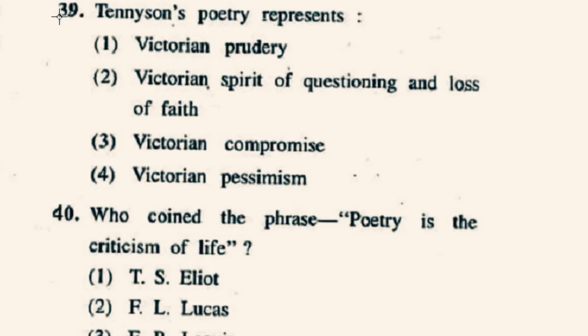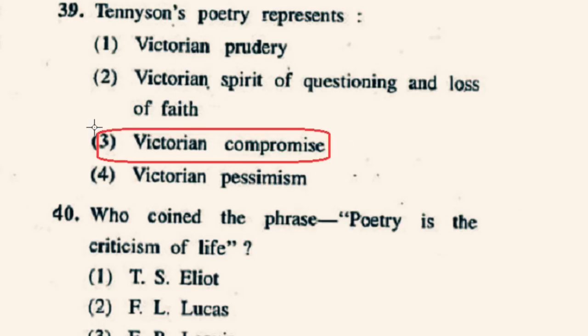Question number 39: Tennyson's poetry represents what? The Victorian period was a time of contradiction, often referred to as the Victorian compromise. On one hand there was the progress brought about by the industrial revolution, the rising wealth of the upper and middle classes, and the expanding power of Britain and its empire. On the other hand there was poverty, disease, deprivation and injustice faced by the working classes. Tennyson's poetry represents the Victorian compromise. Option 3rd, Victorian compromise, will be the correct option.